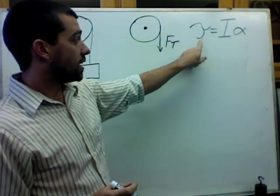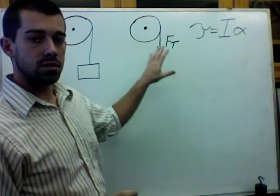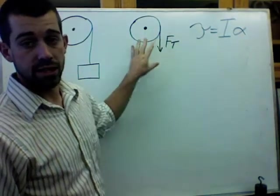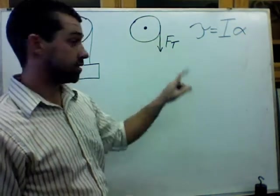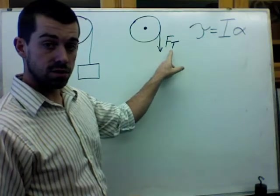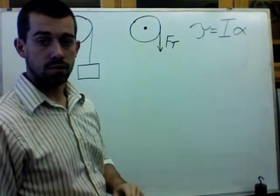Now I need to substitute some things into this. I want to know how this equation is related to this situation, and it's related because this force of tension that is on the pulley is what causes this torque.